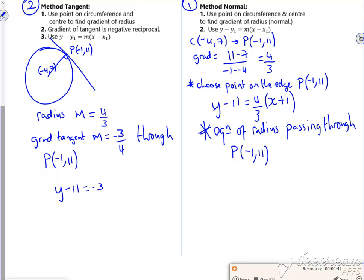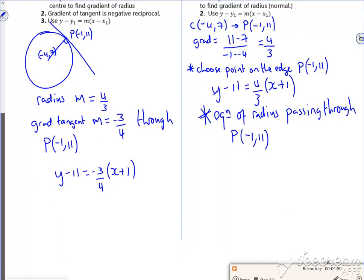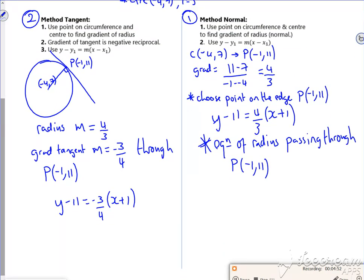And that's passing through P which is (-1, 11). So if I do the equation, it's y - 11 = -3/4(x + 1). There we go. Does it ask for any other way? No. But you can see it's far better to work out the equation of the radius, the equation of the normal before.